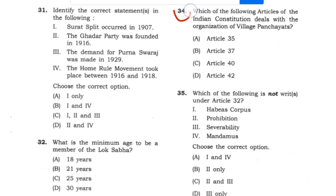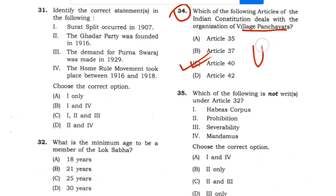Question 34: Which of the following articles of the Indian Constitution deals with the organization of village panchayat? Answer: Article 43. Option C.